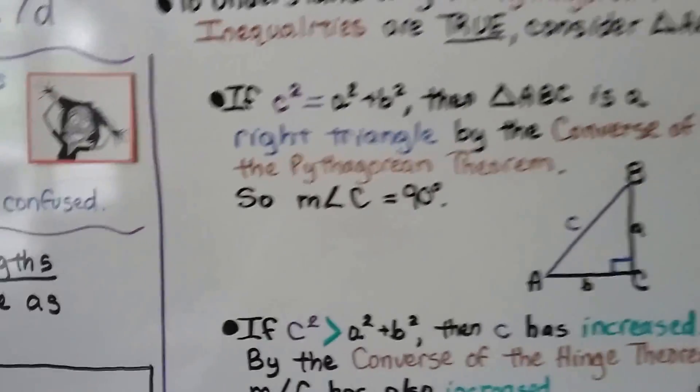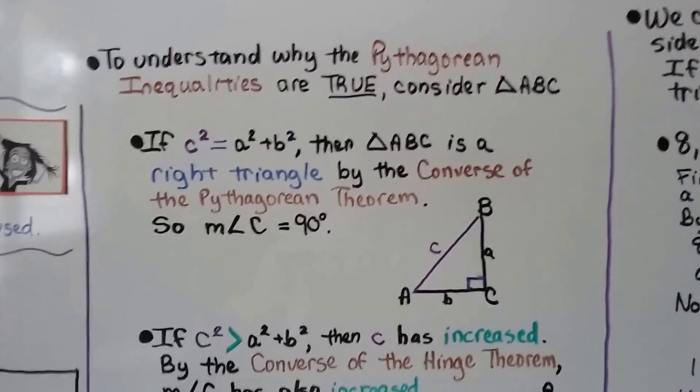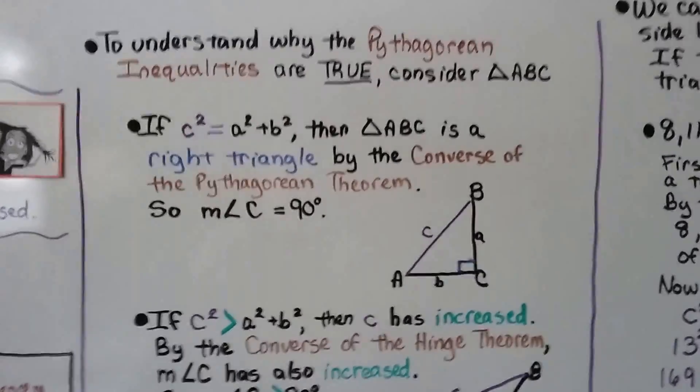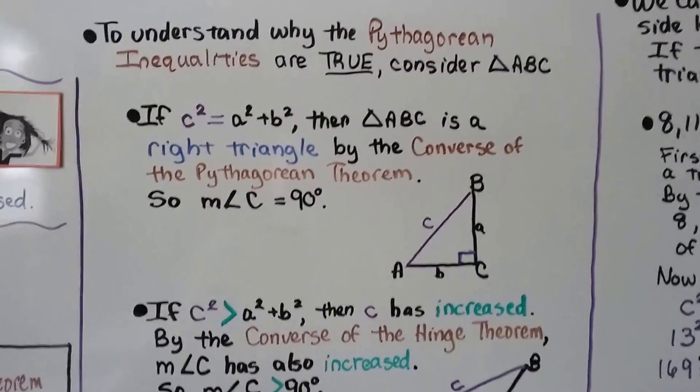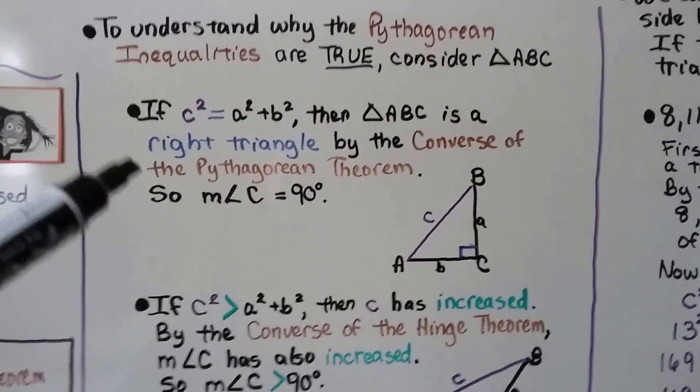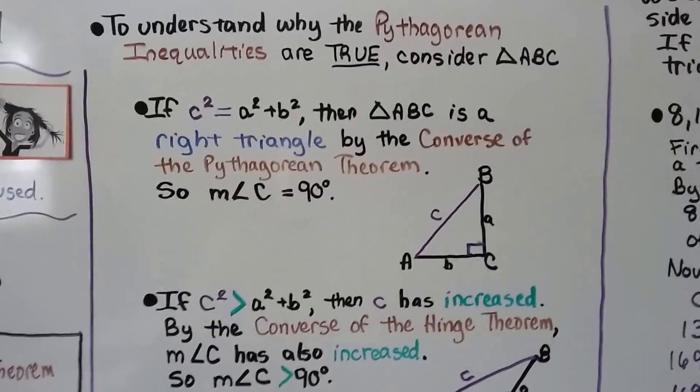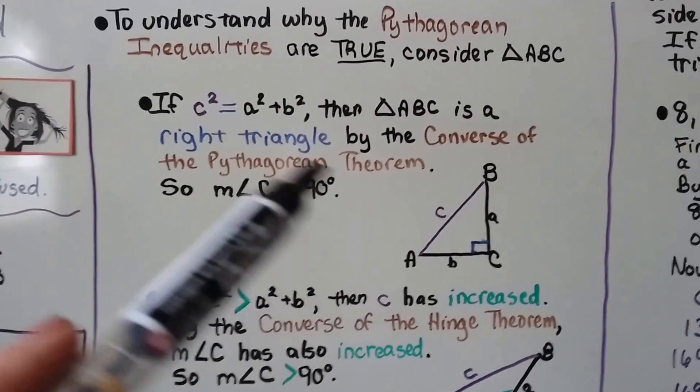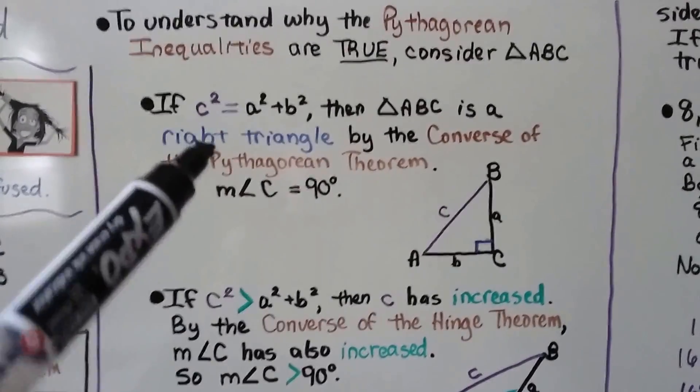To understand why the Pythagorean Inequalities are true, consider triangle ABC. If c² = a² + b², then triangle ABC is a right triangle by the converse of the Pythagorean Theorem. Remember, the converse says if it fits this equation, then it's a right triangle.